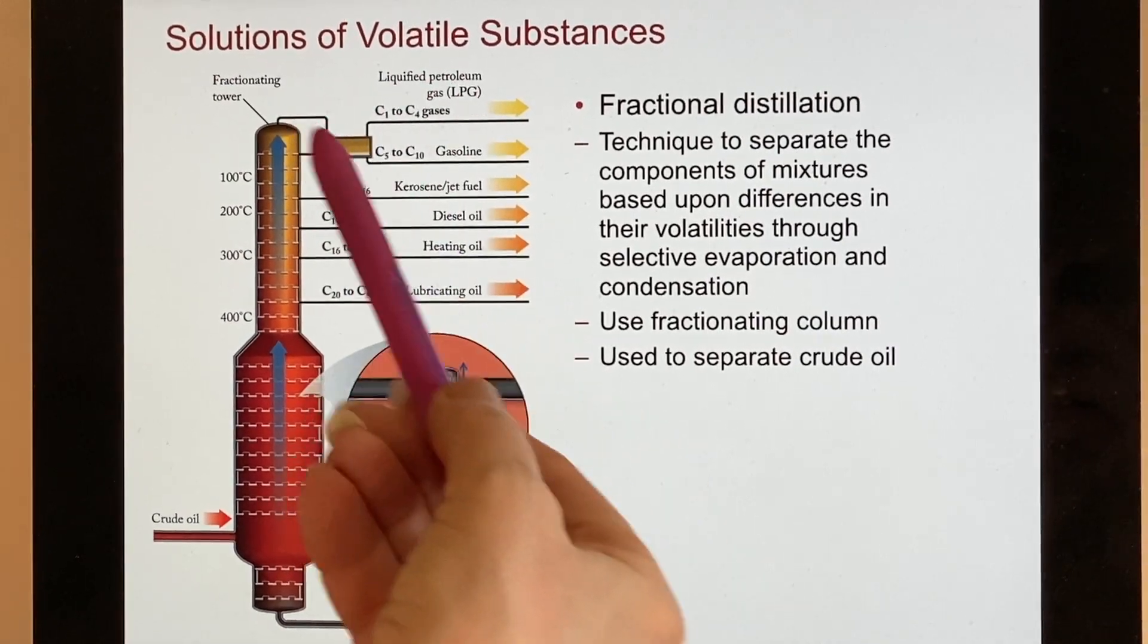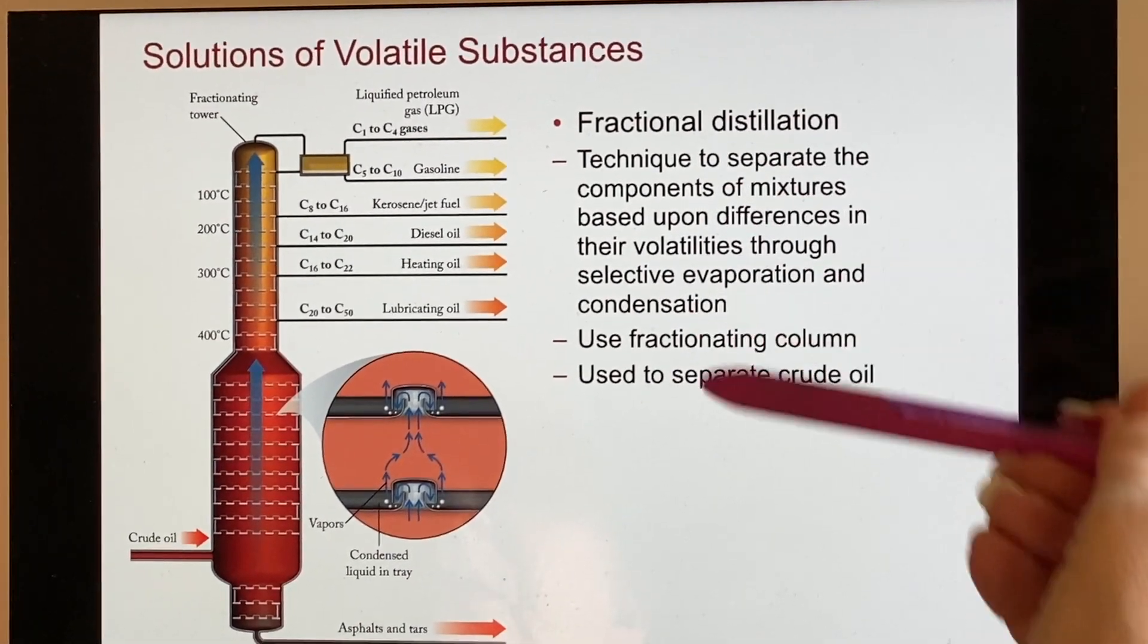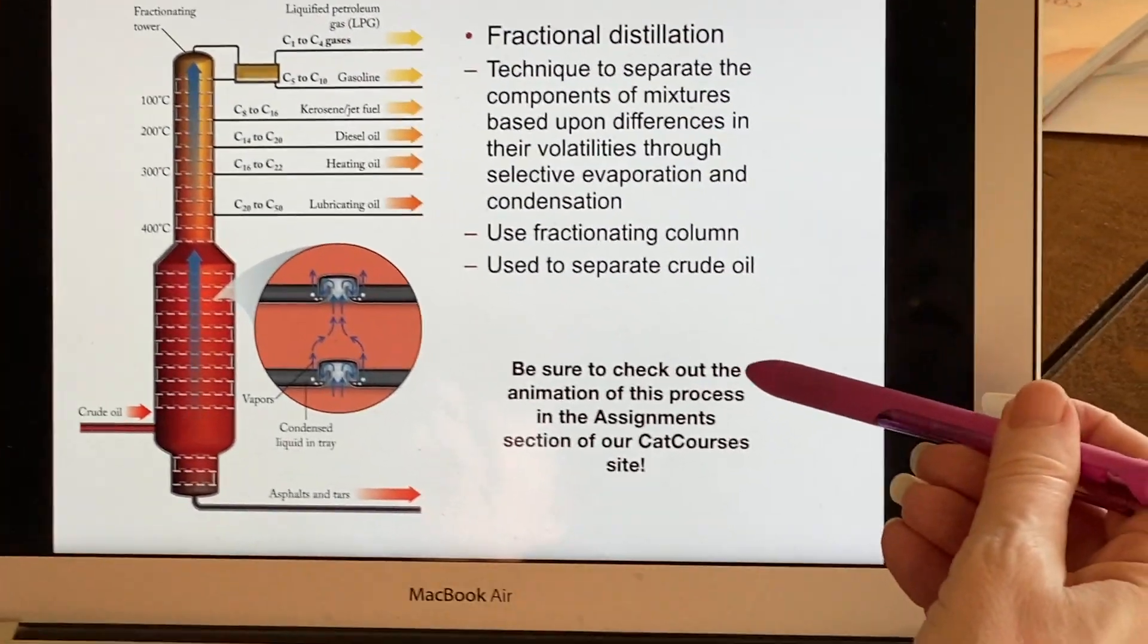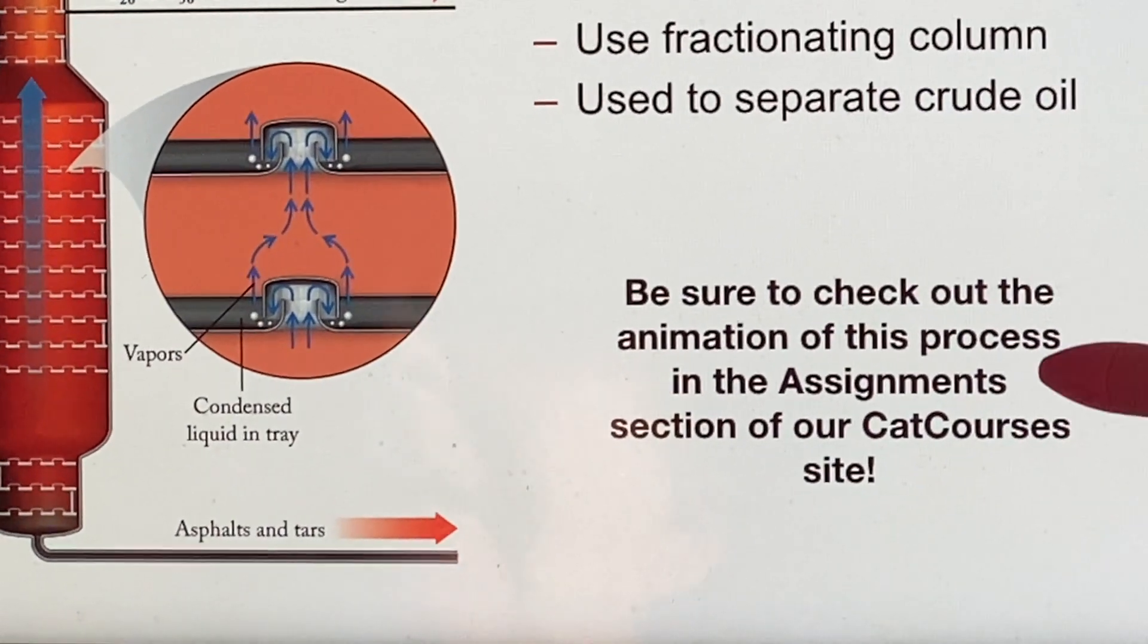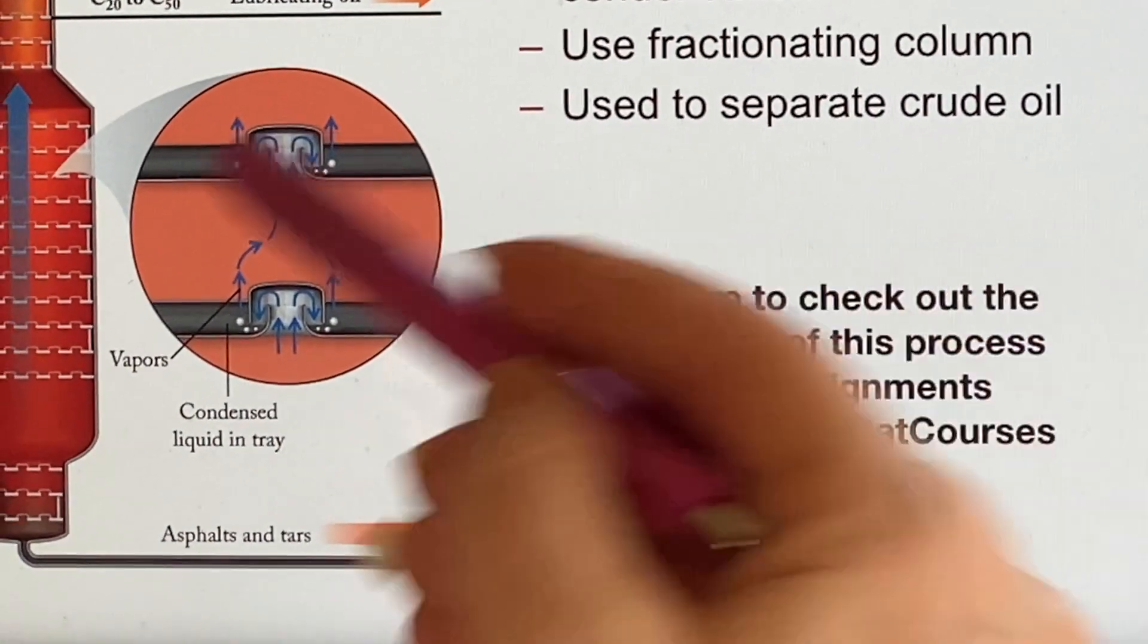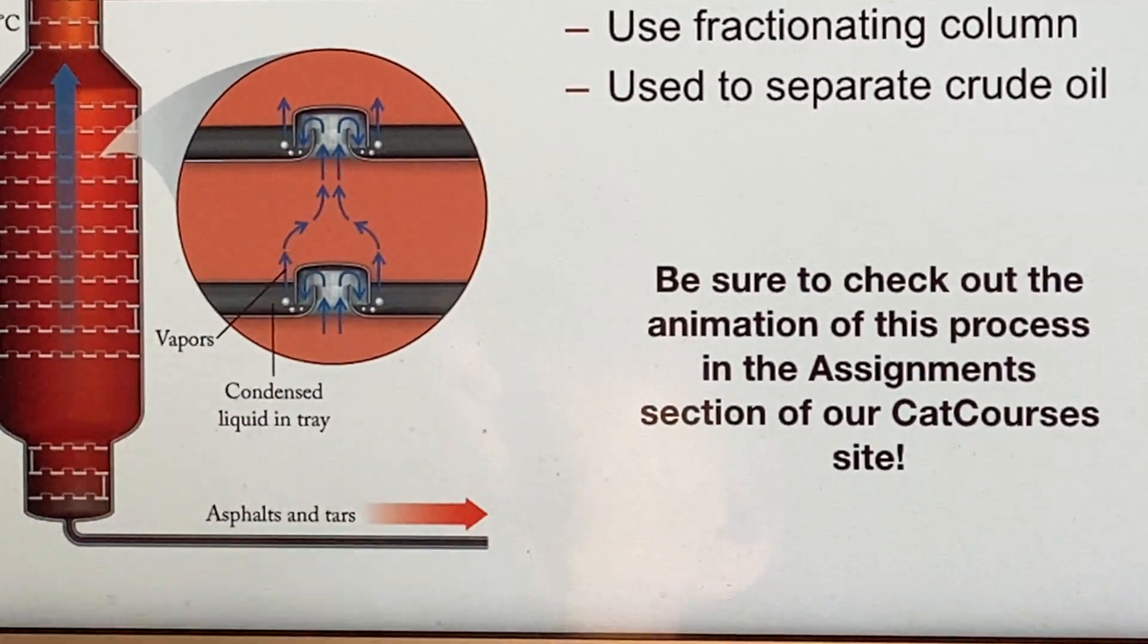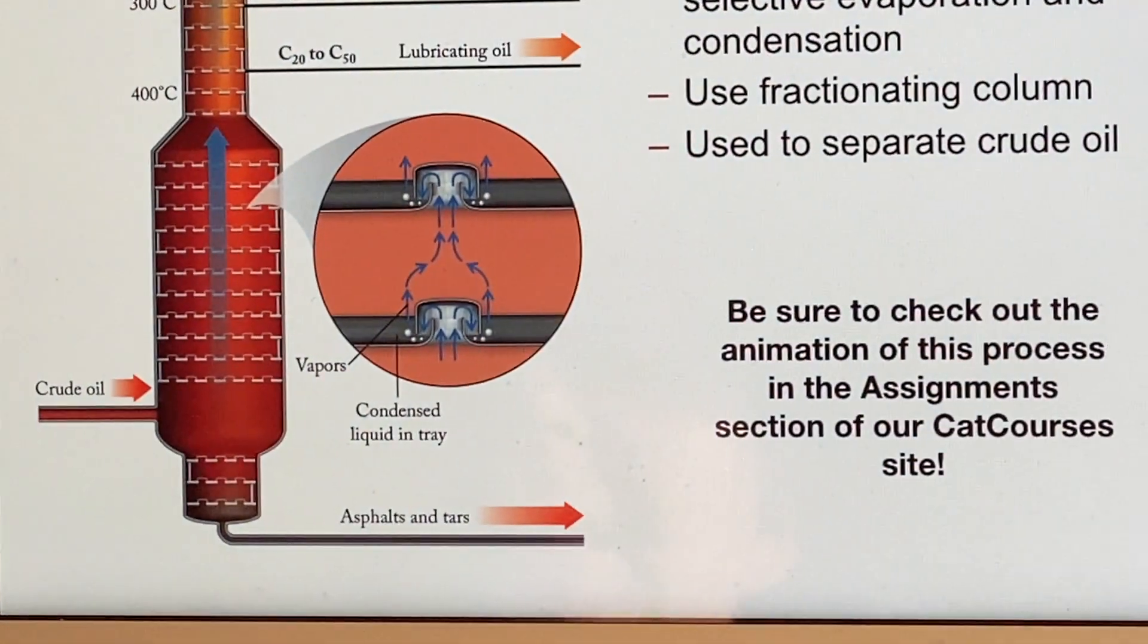And so this is what happens to a barrel of crude oil. It makes massive numbers of things. You should make sure you check the animations of this because your textbook has very nice animations. If you watch this process in an animation, it'll make a lot more sense than just these arrows do because you'll get to see a little bubble of it do what it's going to do.